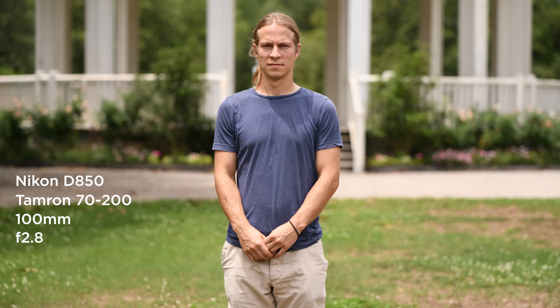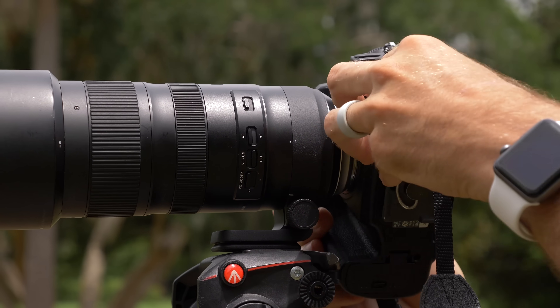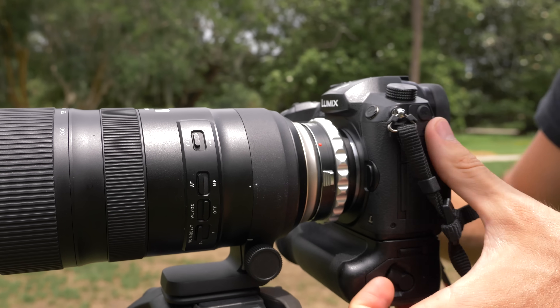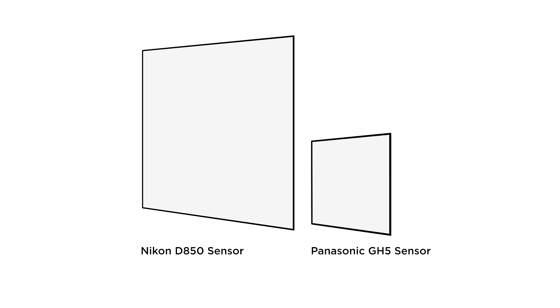So now let's go back to the very first question: does a larger sensor produce shallower depth of field? For this test, I'm taking an image of David at 100mm at f2.8 on my full-frame Nikon D850. I'm then going to leave the lens in the exact same place and take the exact same shot with my GH5, which has a micro four-thirds sensor. We have very different fields of view with both cameras, but if we zoom in with the Nikon D850 shot to create the same field of view, the depth of field will look the exact same.